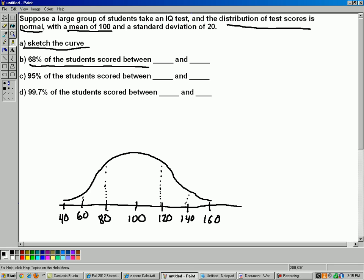68% according to the 68-95-99.7 rule, 68% of the students scored between 80 and 120. So there we go, 80, 120.